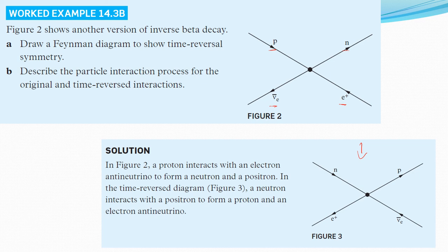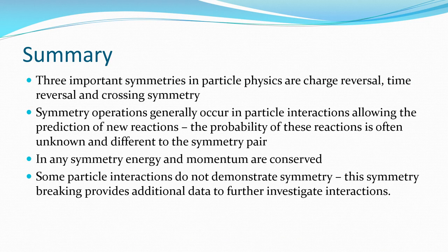So reading what it says, a proton interacts with an electron antineutrino to form a neutron and a positron. In a time reverse diagram, which is figure three, a neutron interacts with a positron to form a proton and an electron antineutrino. Ever stopped and thought that if we have electrons and we have positrons, maybe sometimes we should just call that an electroph instead of a positron. Electron? Electroph? Don't give up your day job.